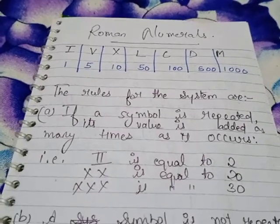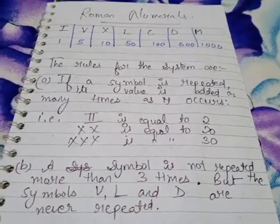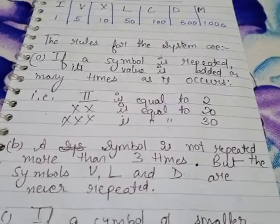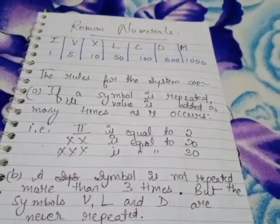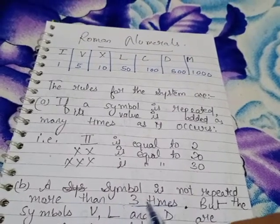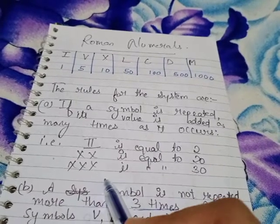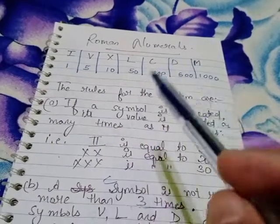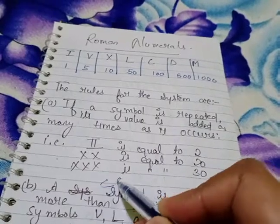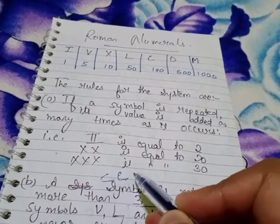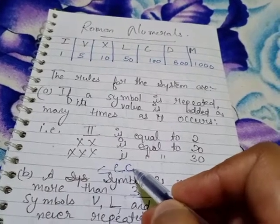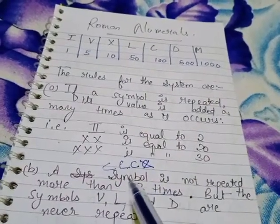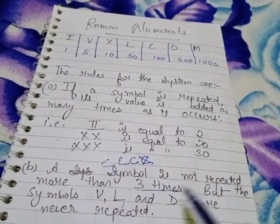The next rule: a symbol is not repeated more than three times. Mark this point carefully — no symbol can be repeated more than thrice. For example, C means 100. Writing CC gives 200, CCC gives 300. It is not possible to write C four times. No symbol can be repeated more than three times.